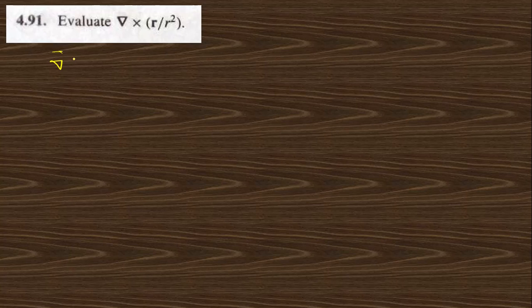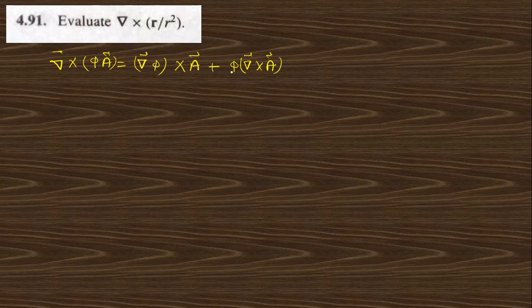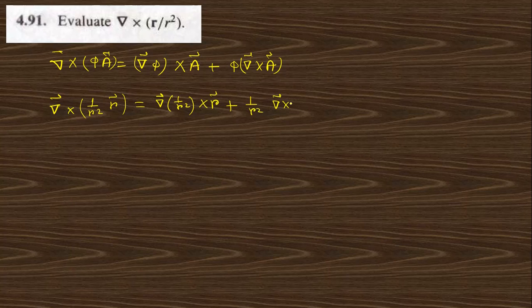To solve this, use the vector identity: curl of (φ·A) equals grad(φ) cross A plus φ curl(A). Here, φ is 1/r² and A-vector is r-vector. So we can write: grad(1/r²) cross r-vector plus (1/r²) curl(r).